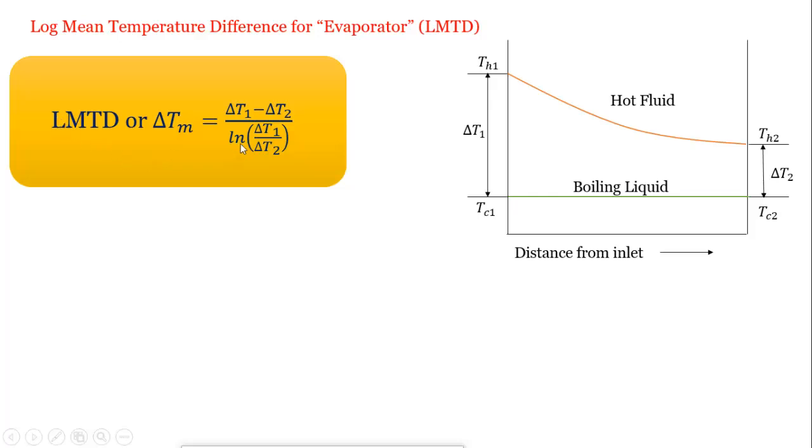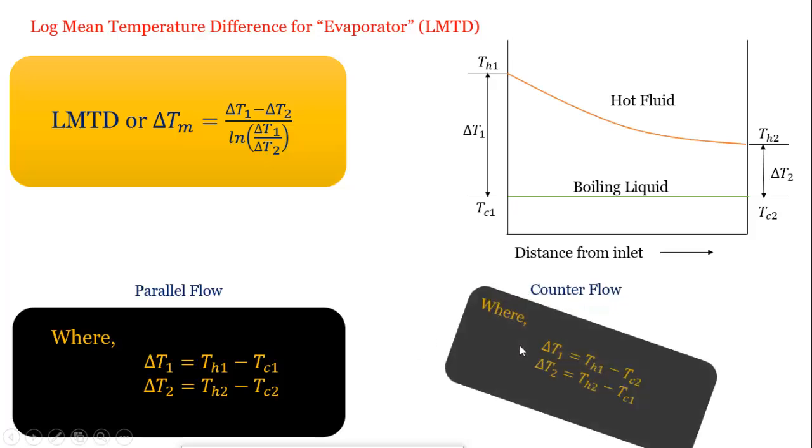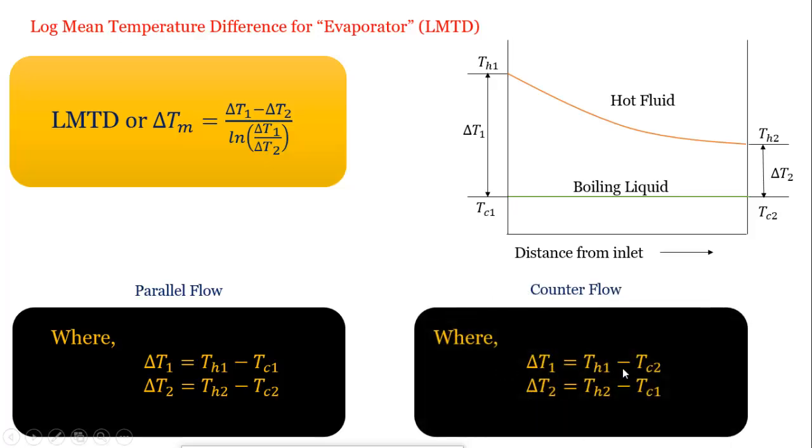Use the same formula for LMTD: delta T1 minus delta T2 divided by ln(delta T1/delta T2). For parallel flow, delta T1 equals TH1 minus TC1, and delta T2 equals TH2 minus TC2. And for counter flow, delta T1 equals TH1 minus TC2, and delta T2 equals TH2 minus TC2.